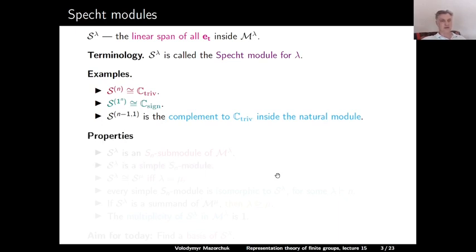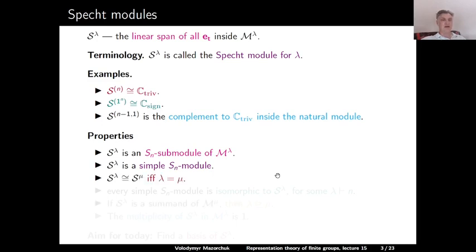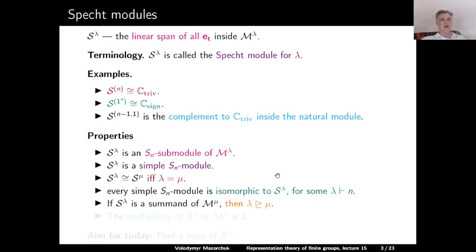We have already seen the following properties of Specht modules. First, S^lambda is an S_n submodule of the permutation module. Second, S^lambda is a simple S_n module. Third, S^lambda is isomorphic to S^mu if and only if lambda equals mu. Fourth, every simple S_n module is isomorphic to S^lambda for some partition lambda of n. In particular, the set of all Specht modules is a complete and irredundant set of representatives of the isomorphism classes of simple S_n modules. We also know that if S^lambda is a summand of some permutation module m^mu, then lambda dominates mu, and the multiplicity of S^lambda in m^lambda is 1.